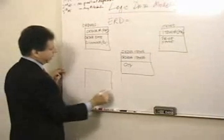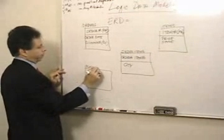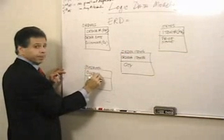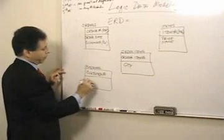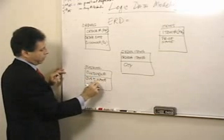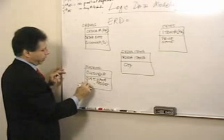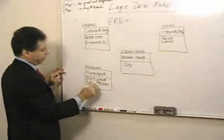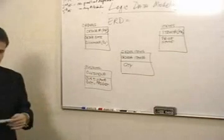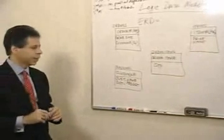And then finally, I had Customers, and the primary key was customer number, customer name, and the customer address. Please remember, just for clarification, that I am not breaking down address to its first line address, second line address, zip code, and state. For the purposes of this example, it really is not necessary.